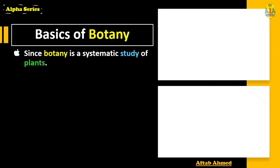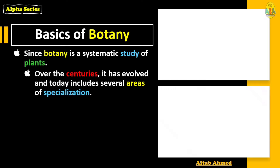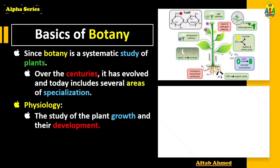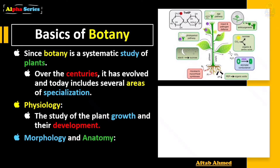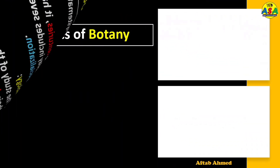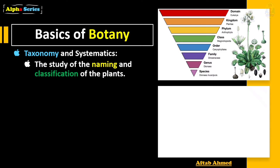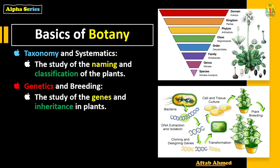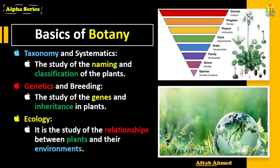Basics of botany: Since botany is a systematic study of plants, over the centuries it has evolved and today includes different areas of specialization. The first is physiology — the study of plant growth and development. The second is morphology and anatomy, which is a study of the structures of different plants. Next is taxonomy and systematics — the study of the naming and classification of different plants into groups. Then genetics and breeding — the study of genes and inheritance in plants. And finally, ecology — the study of the relationships between plants and their environment.